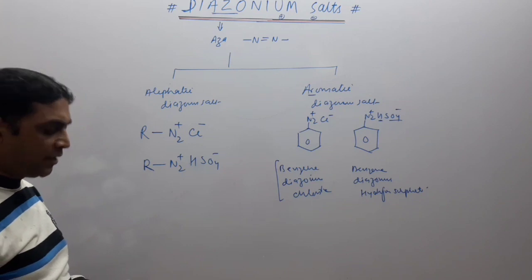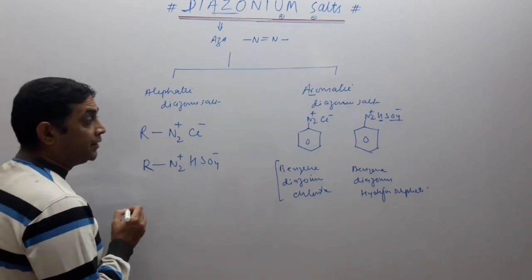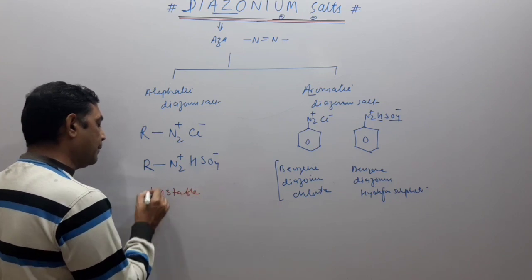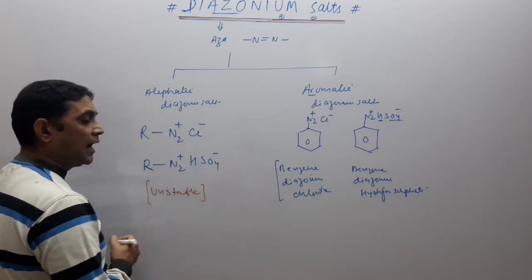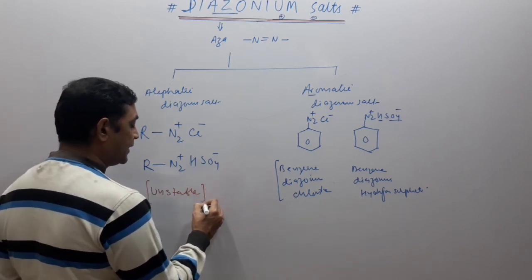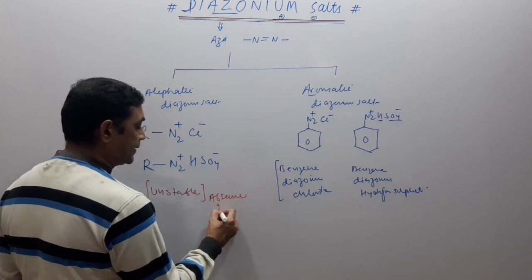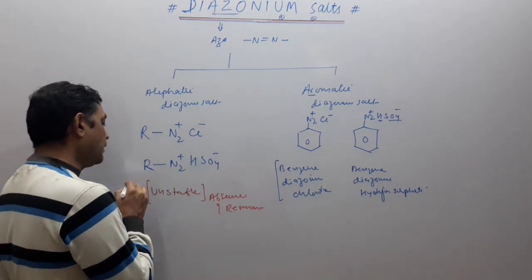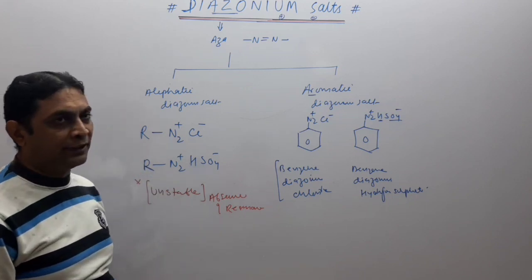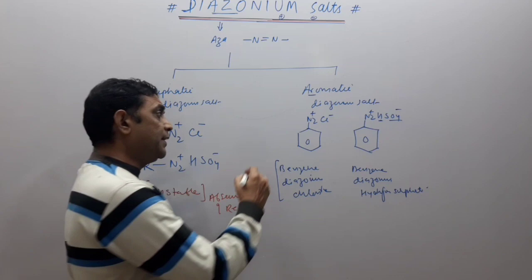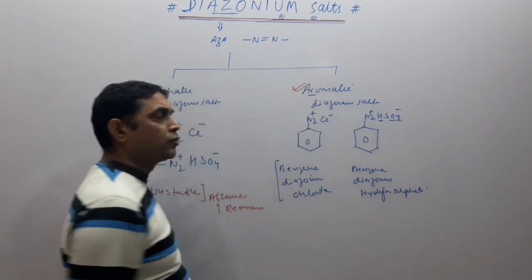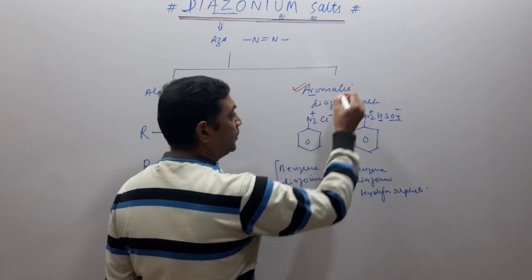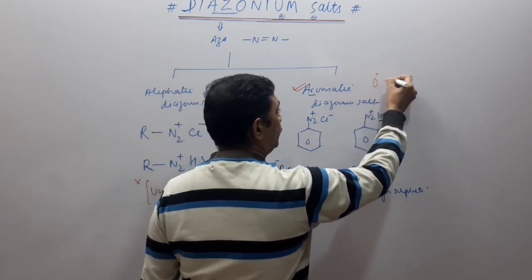Now students, the most important thing is stability. Aliphatic diazonium salts are highly unstable because they show absence of resonance, so they will not mostly undergo chemical reactions. Aromatic diazonium salts are used in most organic reactions and these exist only at low temperature.